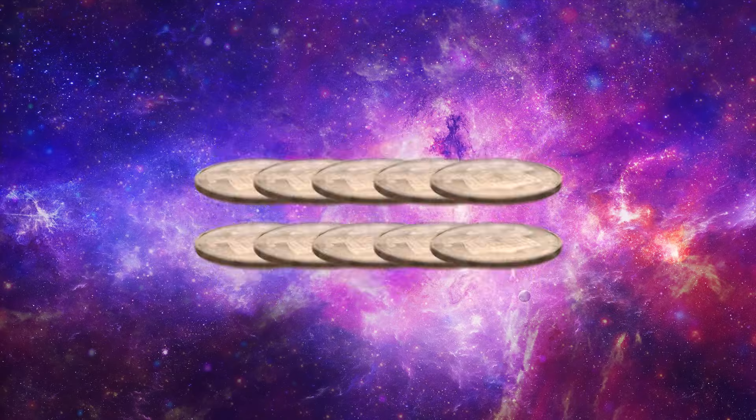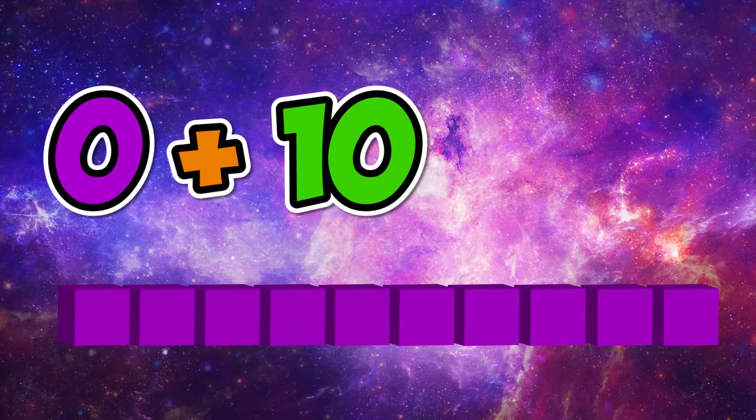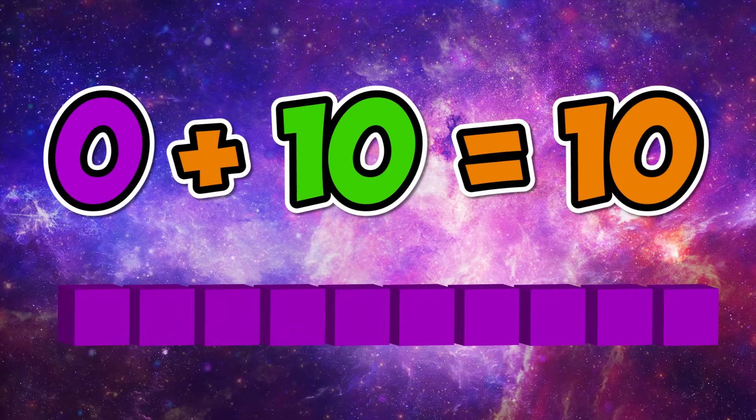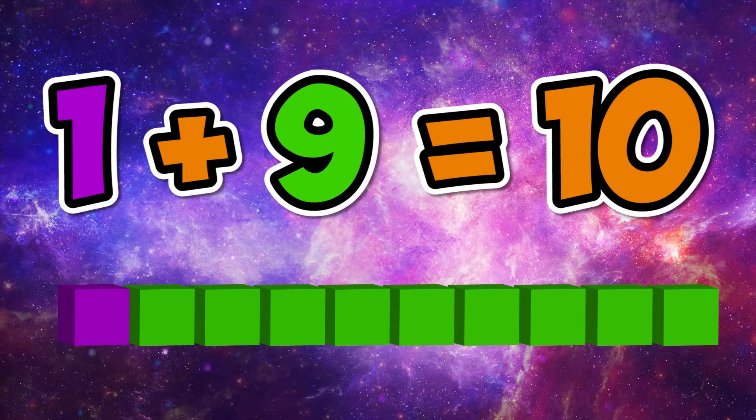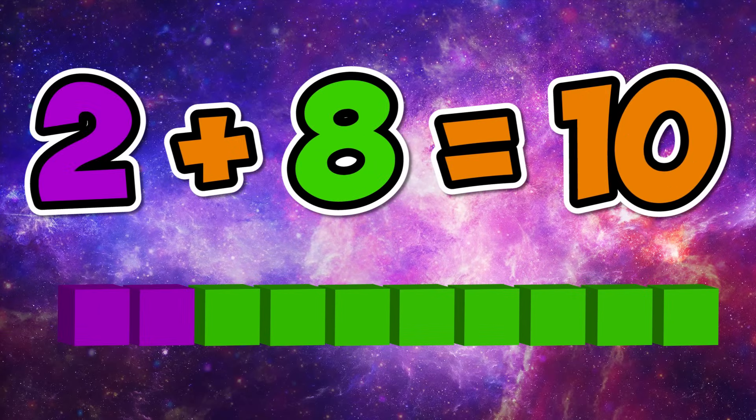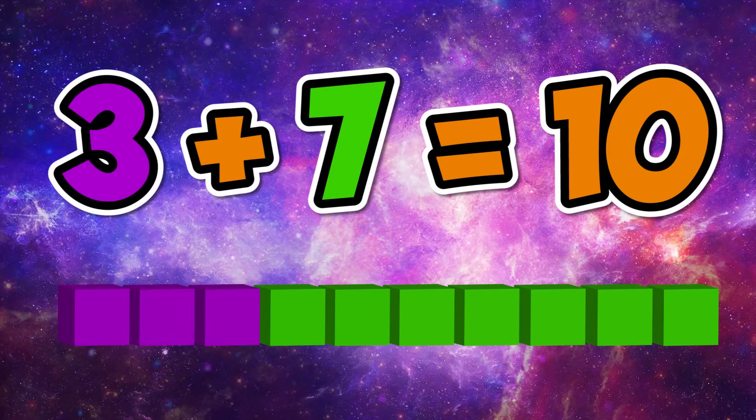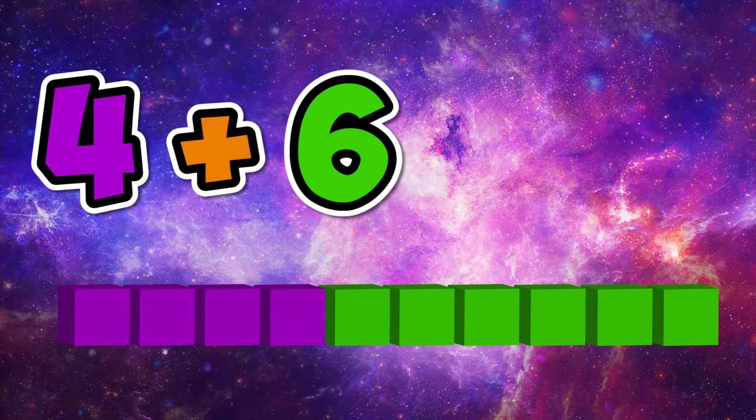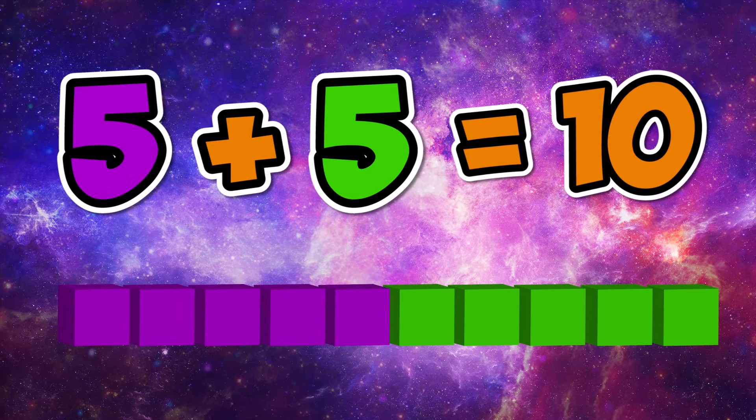Ten cents makes one dime. What numbers make ten every time? Zero plus ten makes ten, one plus nine makes ten, two plus eight makes ten, three plus seven makes ten, four plus six makes ten, five plus five makes ten.